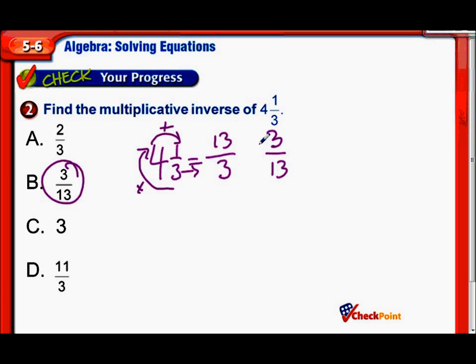And just to verify, watch how if you multiply these together, 13 times 3 is 39, 3 times 13 is 39. And 39 divided by 39 is 1. When you multiply a number and its reciprocal, you end up with 1. That's what they call a multiplicative inverse.